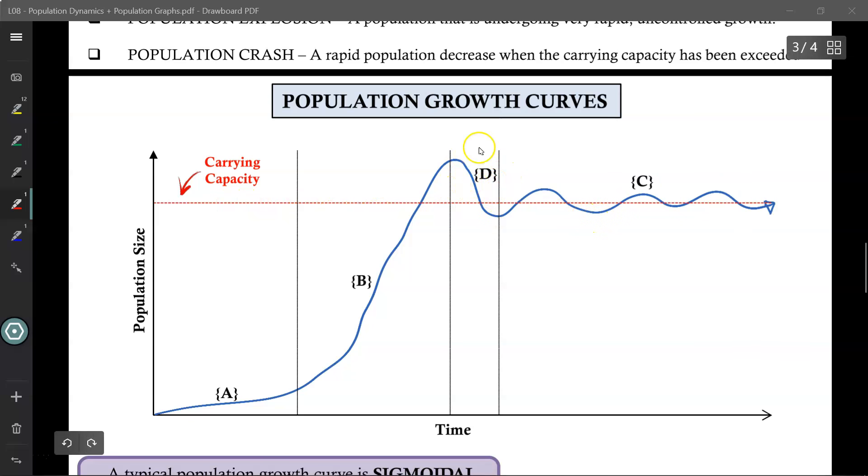Now, this region over here labeled D is known as the dieback region or the population crash region. Typically, this occurs if the population overshoots the carrying capacity by a lot. And now suddenly it's catching up to them. Organisms generally don't keep track of how much resources or how much food is available to them and whether they should save it for next year or not. And so what they'll do is they'll just keep eating and eating and eating and reproducing and reproducing until finally they realize there's not enough food for everyone. And so some of the organisms at that point will starve to death and die. Once enough of the population has died, that will give the ecosystem enough time to regenerate its resources, thereby allowing the population again to increase.